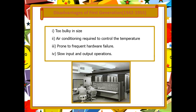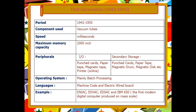But it had a few disadvantages also. As mentioned, it used a lot of vacuum tubes and a single vacuum tube is large in size, so at that time the computer was too bulky. It also produced a lot of heat, which required air conditioning to control the temperature. Due to this excess heat emission it was prone to frequent hardware failure, and its input and output operations were very slow.